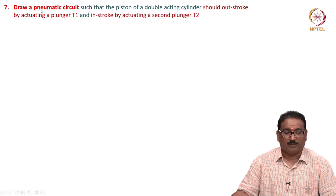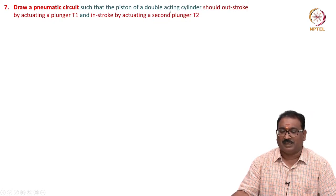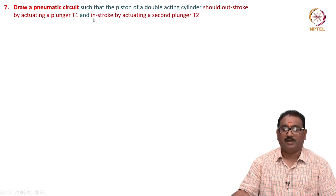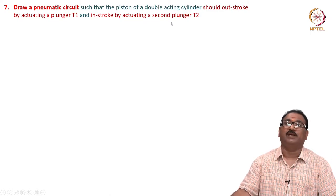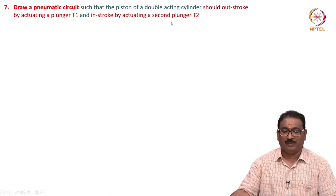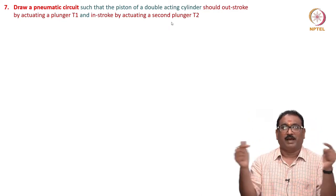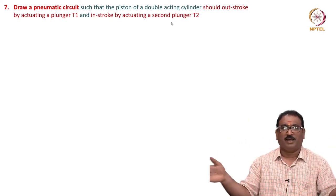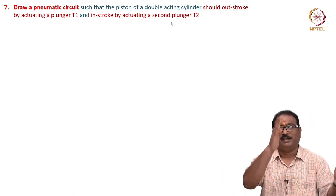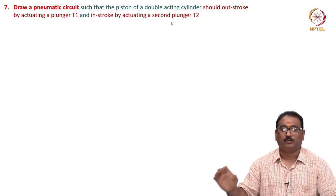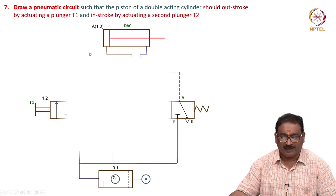Seventh problem: draw a pneumatic circuit such that the piston of a double-acting cylinder should outstroke by actuating plunger T1, and in-stroke by actuating the second plunger T2. You will use a double-acting cylinder with a pilot-operated valve, one plunger to extend, the other to retract. Add the power source and connect it all.